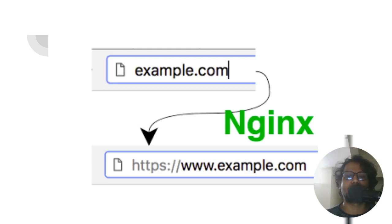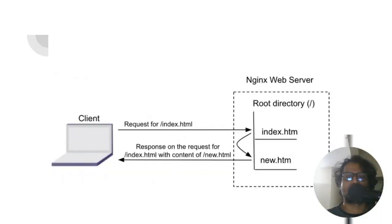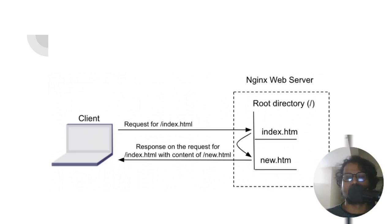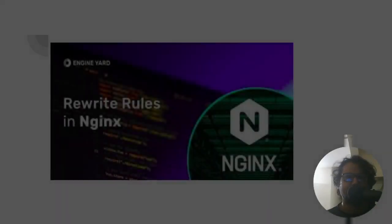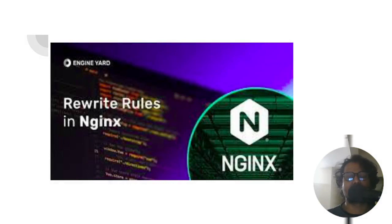So what does rewrite do exactly in our nginx server? If you are searching for something, without changing your main URL it will serve you different content under the hood — you will not see this. As I am showing in the demonstration: you are asking for index.html, and the web server will check if that index.html is available. Based on some logic, even if it is available, it may serve content from a new HTML file, but you still see the original URL. The server is rewriting your URL under the hood, on the fly.